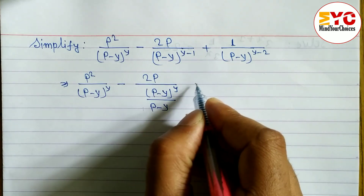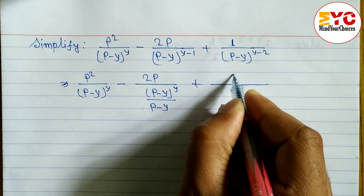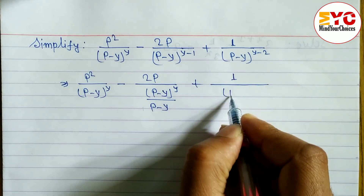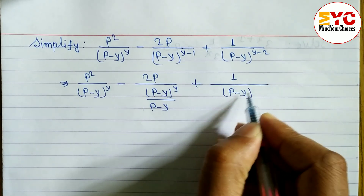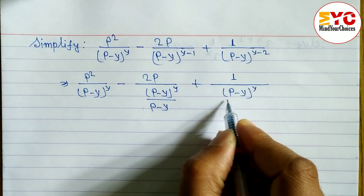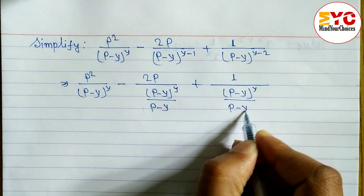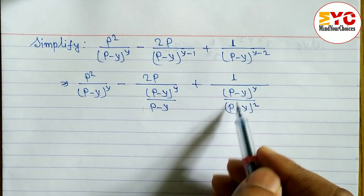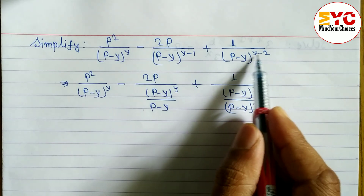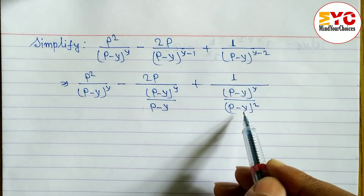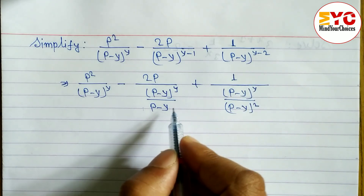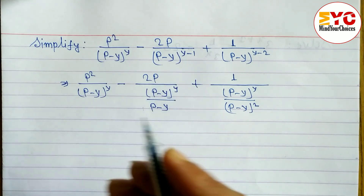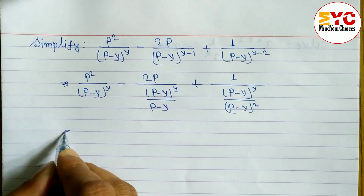Here y−2 means we subtract. We write (p−y)^y divided by (p−y)². The base is the same and in division we subtract the power. The exponent 1 can be written without explicitly writing 1.